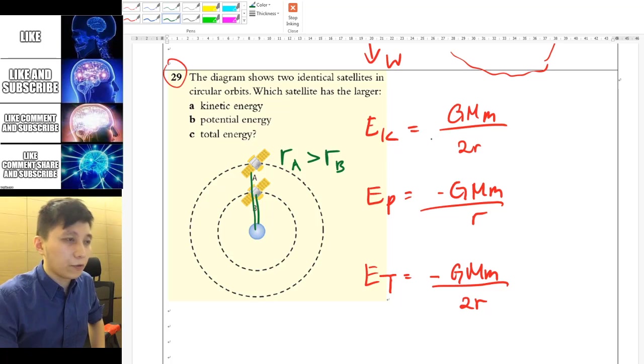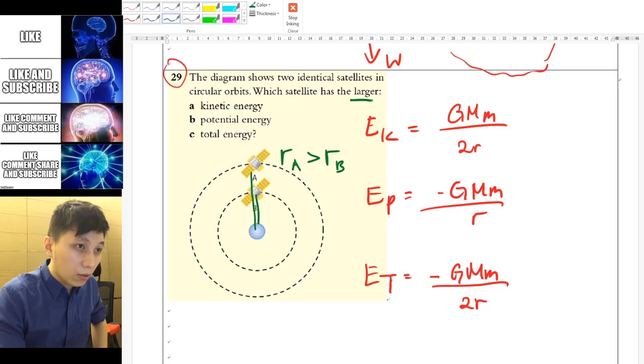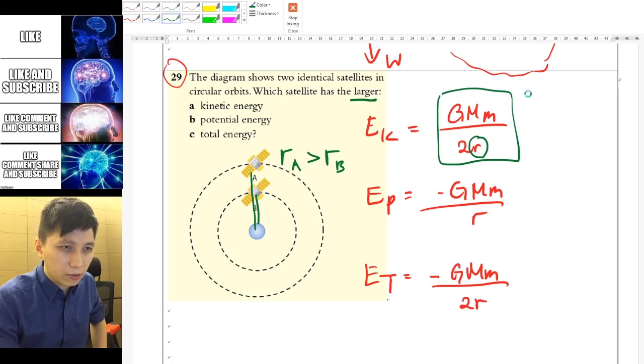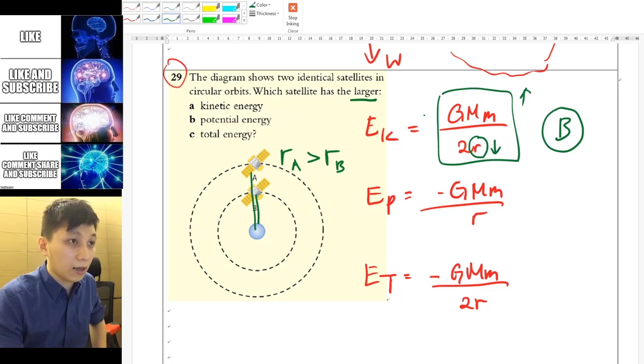So let's go through each energy together. So for the kinetic energy, for the one who has a greater kinetic energy, then you must have, if this whole thing is greater, then r has to be smaller, right? And therefore, B will be the one having a greater KE. Because I think the other things are identical. So the small m is all the same.